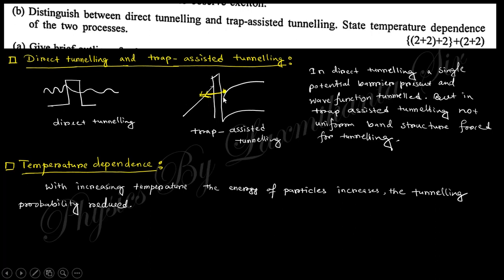This is trap-assisted tunneling where the particle is trapped. With increasing temperature, the energy will be higher and the effect of tunneling will be reduced.